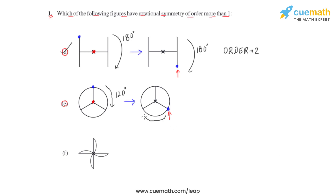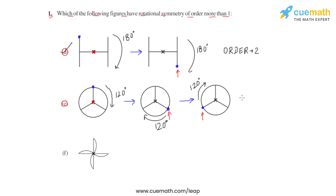Rotating again by 120 degrees clockwise, after a total of 240 degrees rotation, the blue dot's new position represents the rotation, and the figure is again identical to the question. Rotating once more by 120 degrees returns us to the original. Since this figure is rotated three times to return to the original, it has an order of rotation of 3 — which is definitely a rotational symmetry of order more than one.